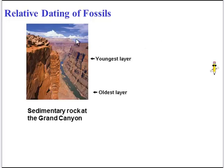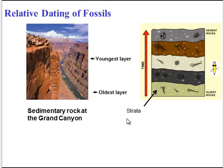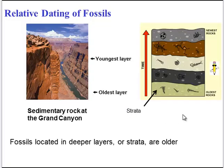One way to date them is through relative dating, which involves the principle of sedimentary rock. When rock layers deposit, the youngest layer is on top and the oldest layer is on the bottom. These layers are also known as strata. So we can infer that fossils located in deeper strata are older than fossils in more shallow strata.